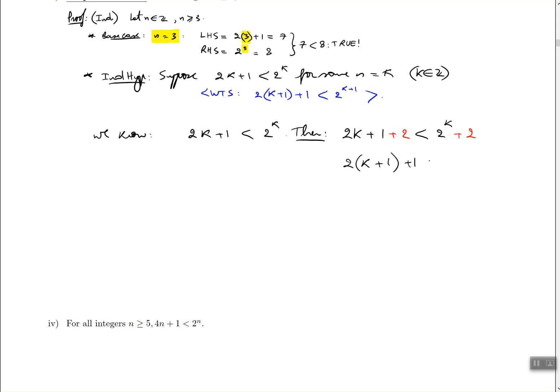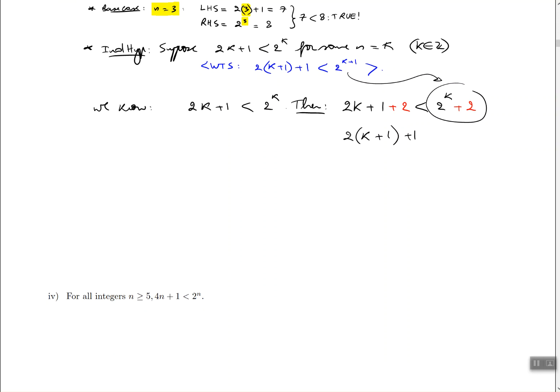Now the second side though is a little bit off. We need it to have 2 to the power of k plus 1, but instead we have 2 to the power of k plus 2. Now to make some modifications, I'm going to kind of go off on a tangent for a second here.